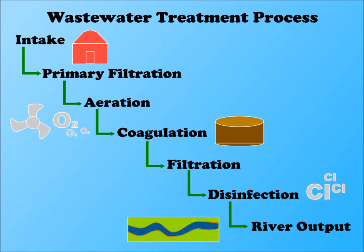Aeration requires a lot of energy and is a major pull to the process. Chemical coagulation settles remaining particles to the bottom while secondary filtration removes them as a thick sludge. This water is then disinfected with chlorine, neutralized, and then returned to a river or output site.